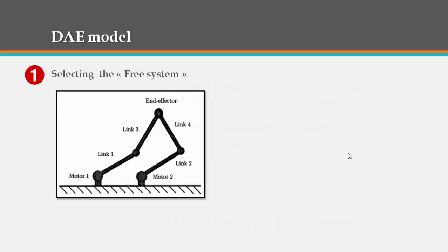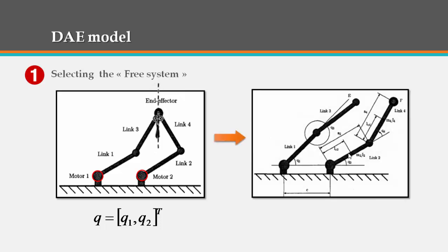Well, in selecting our free system, this in fact is basically obtained by cutting open the loop and resulting in only open chains. And since the actuated chains joints are joint 1 and 2, this is the vector of the generalized coordinates q.